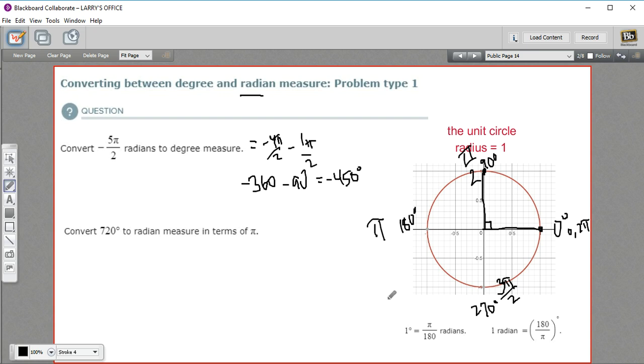The other way to do this is with a simple formula. Since 180 degrees equals π in radians, 1 degree equals π over 180 radians, and 1 radian equals 180 over π degrees. So in this case, we'd use this formula right here. So if we wanted to know degrees from radians, we'd take the negative 5π over 2, and we would multiply that by 180 over π.